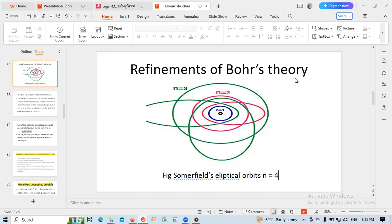I am discussing refinement of Bohr's theory. This shows the elliptical orbits with n equal to 1, n equal to 2, n equal to 3, and n equal to 4.